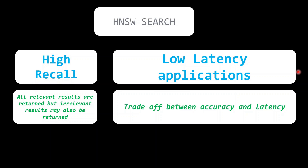The HNSW search is the most commonly used because it is used for low-latency applications. It is a trade-off between accuracy and latency. It has high recall, meaning all relevant results are returned, but irrelevant results may also be returned.